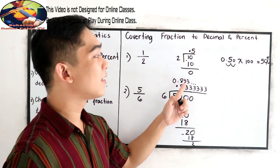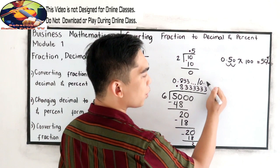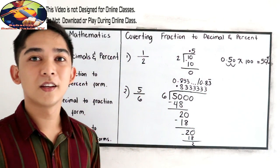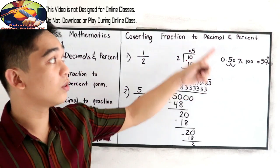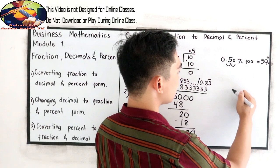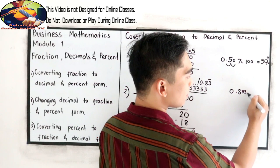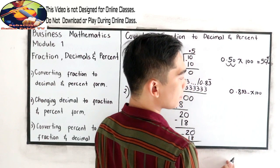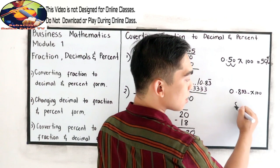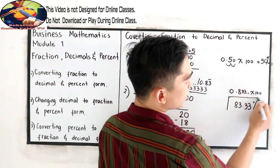Now writing into percent form: 0.833 times 100 — we move the decimal point to the right — so we get 83.33%. This will be our percent form. That is how we convert a fraction to decimal and a fraction to percent.